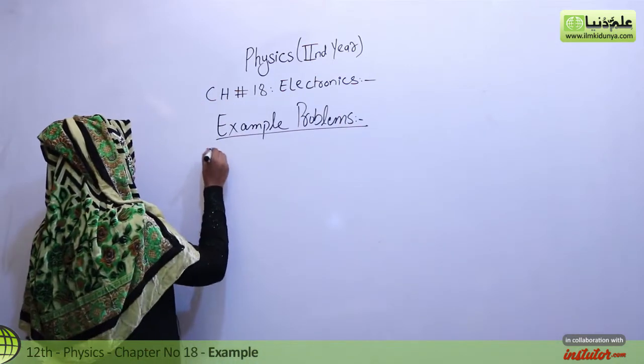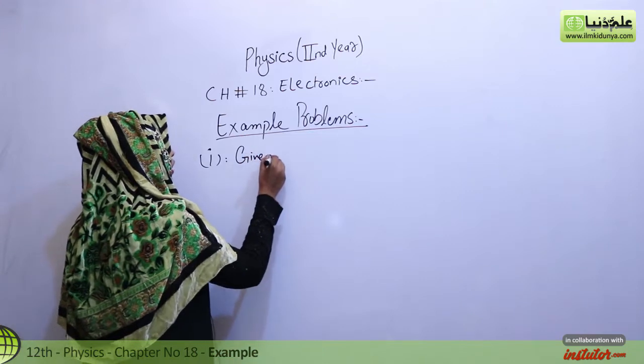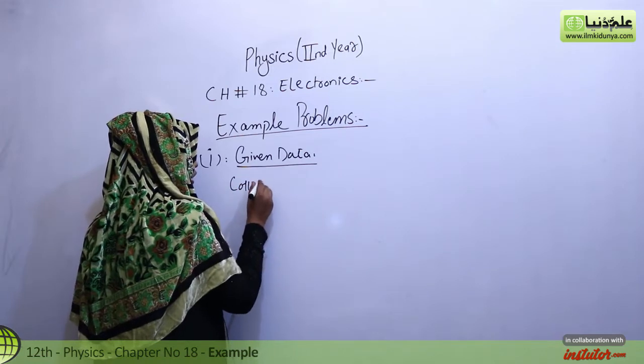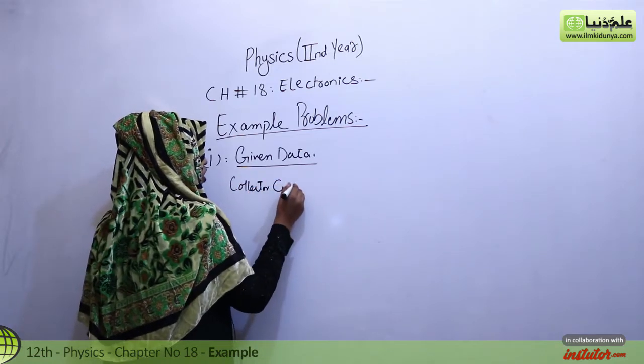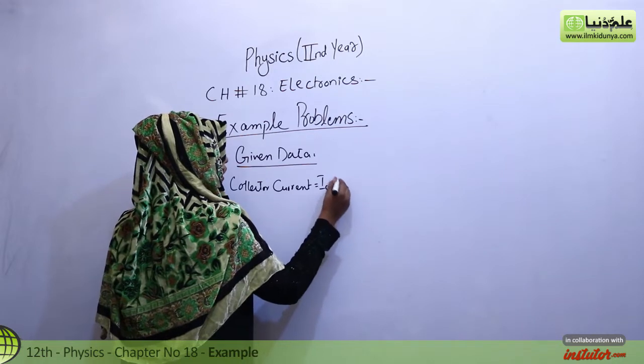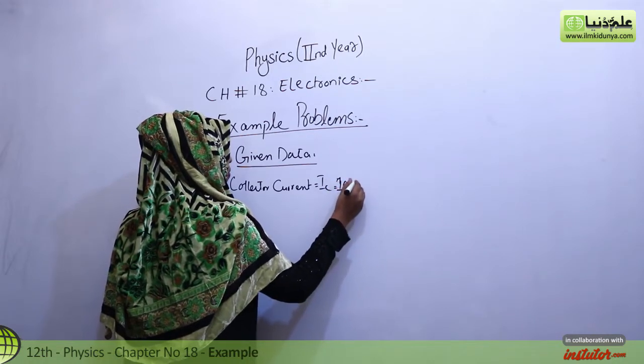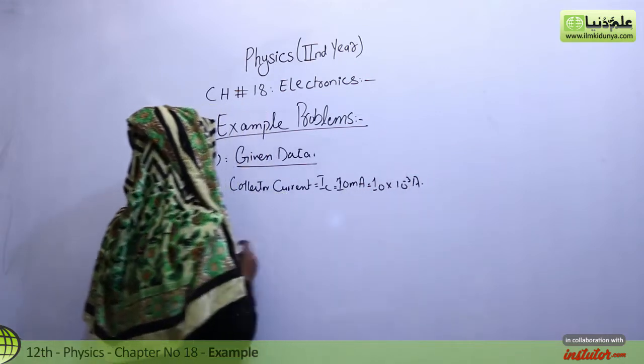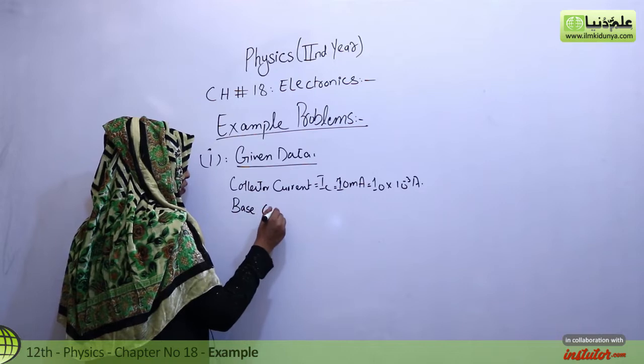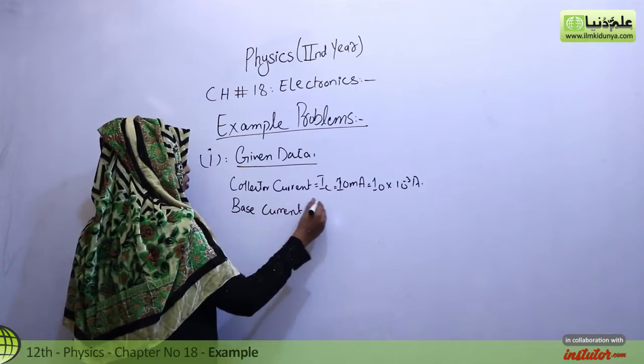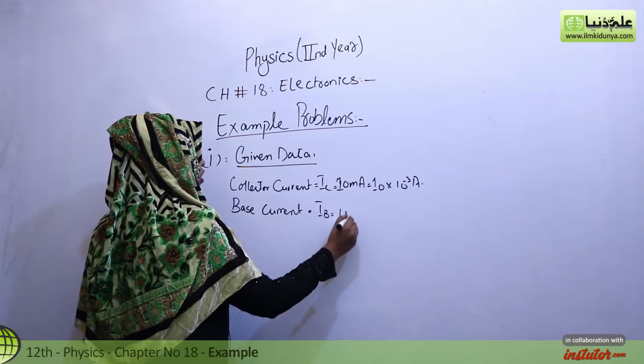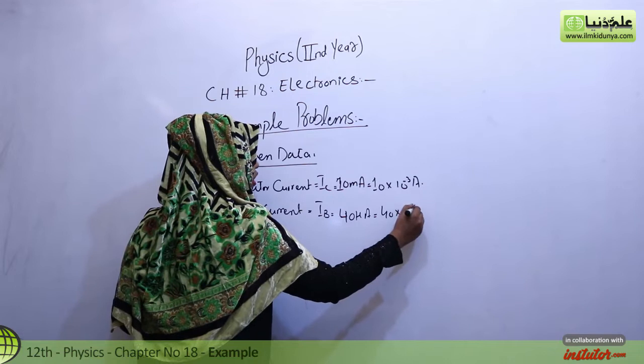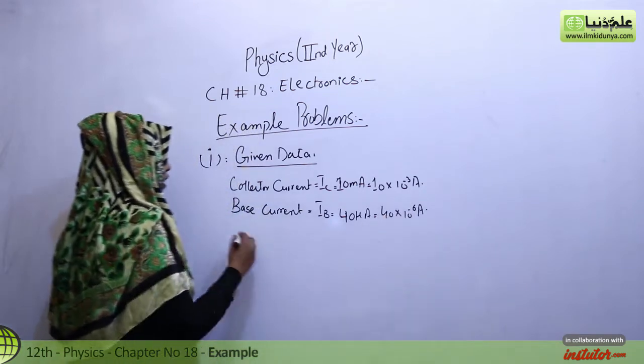We start with example number 1 and let's start with given data. Number 1, collector current, which we will show from IC, that is 10 mA. You need 10 into 10 raise to power minus 3 amperes. And then base current is IB, and this value students, we have 40 µA like 40 into 10 raise to power minus 6 amperes.